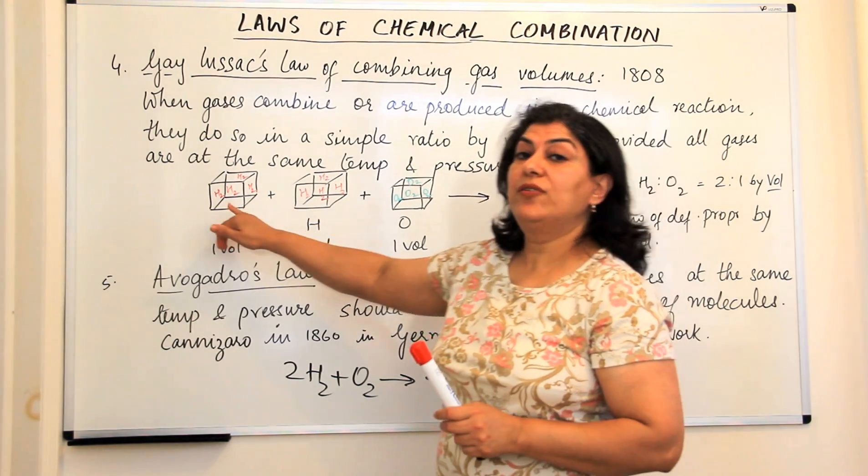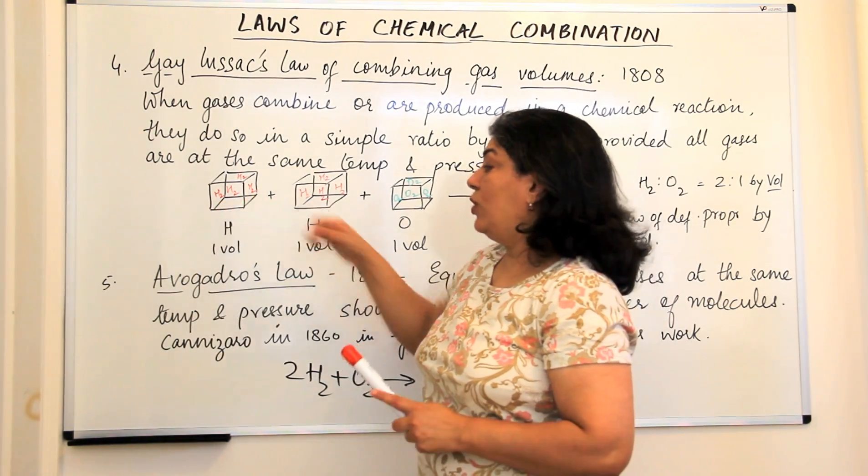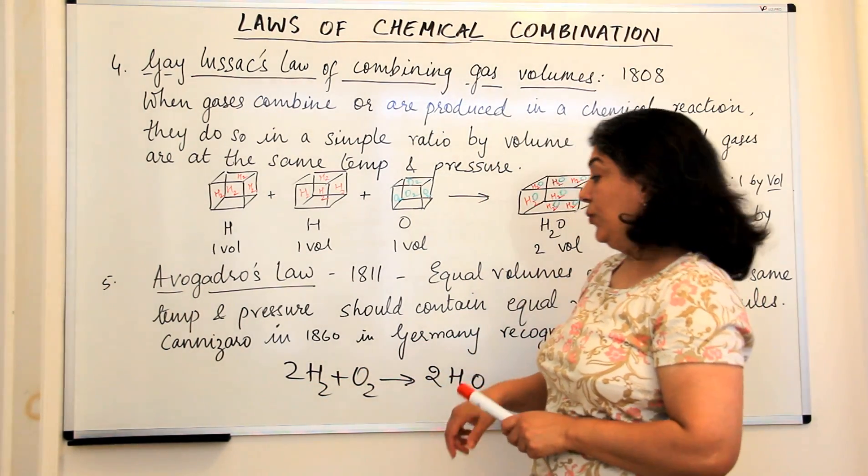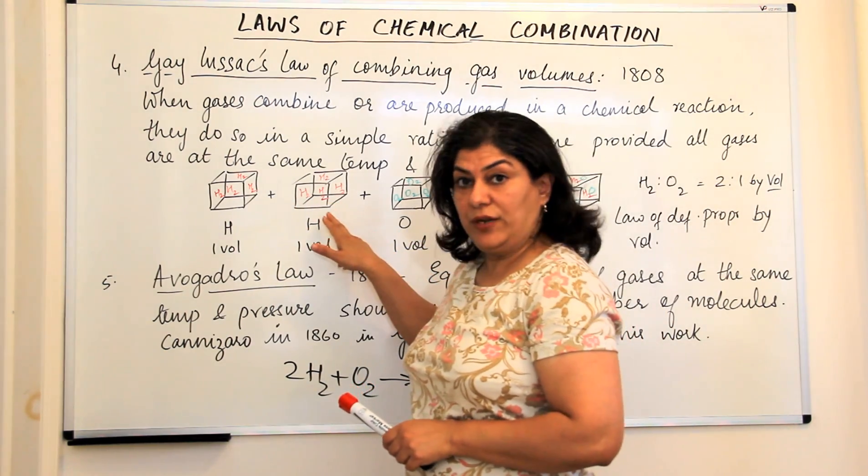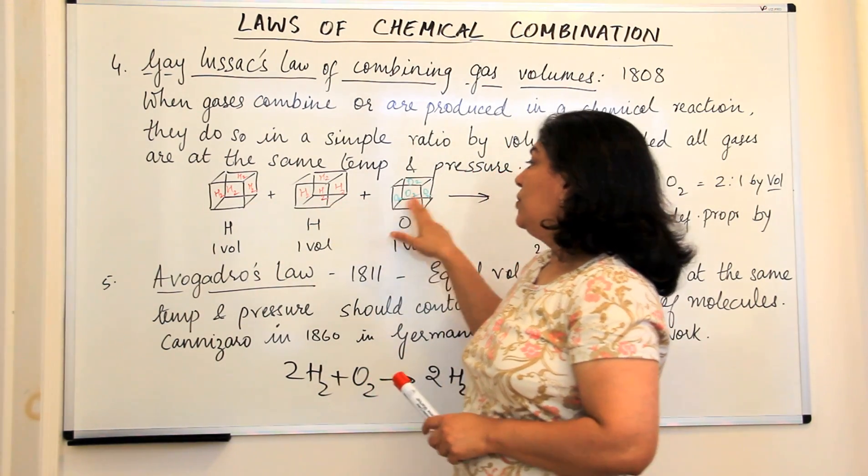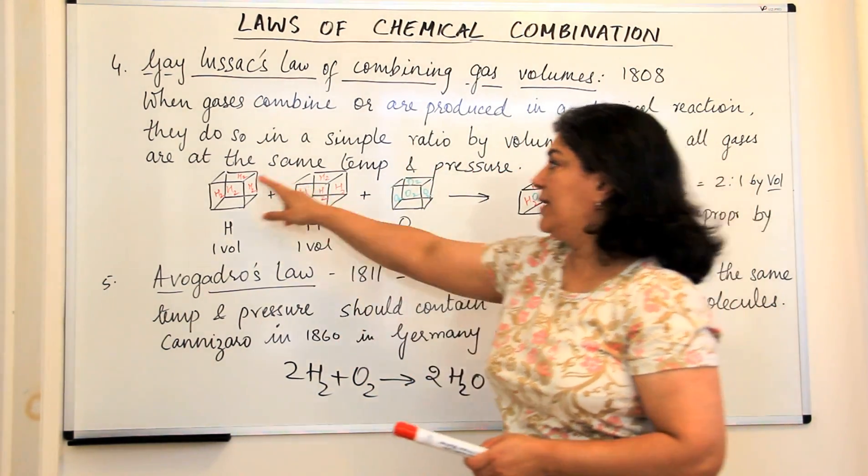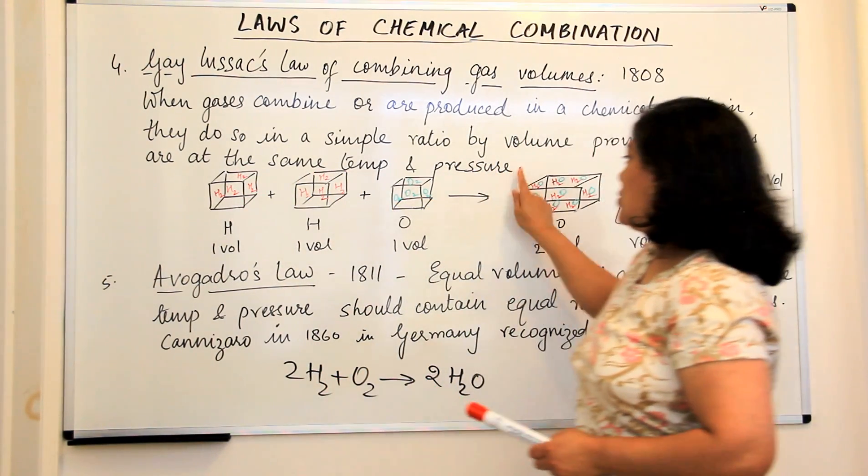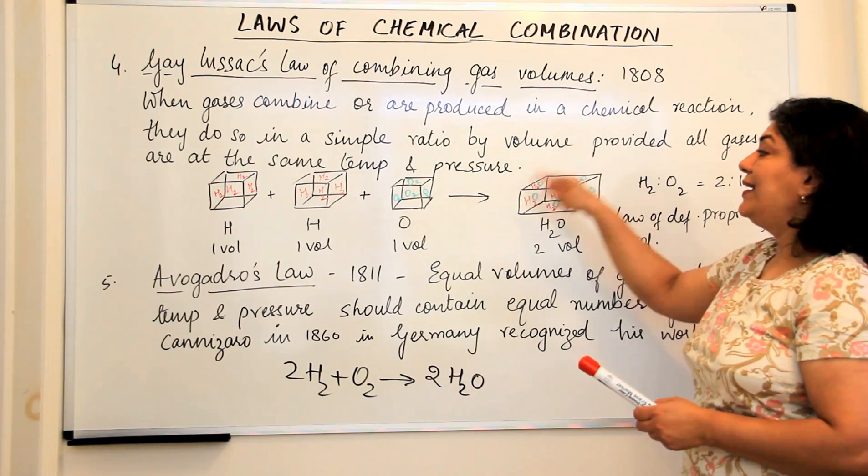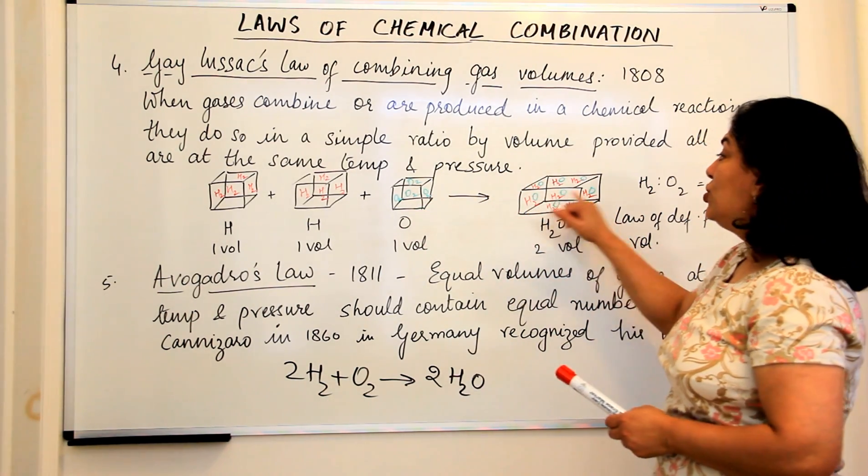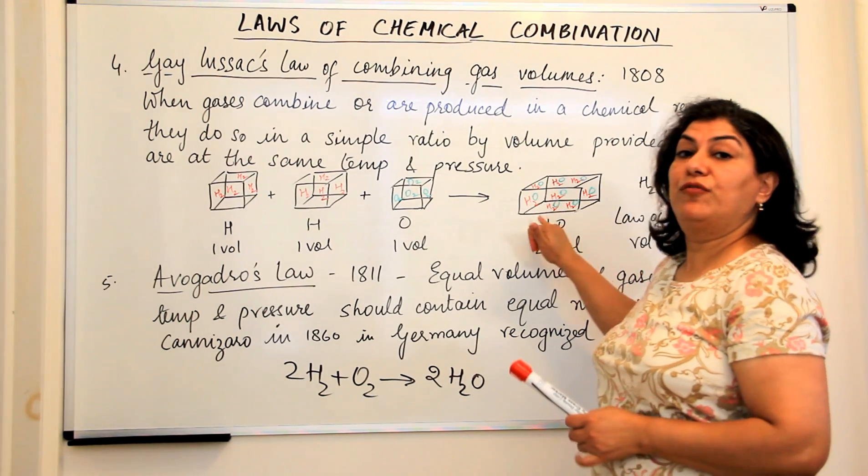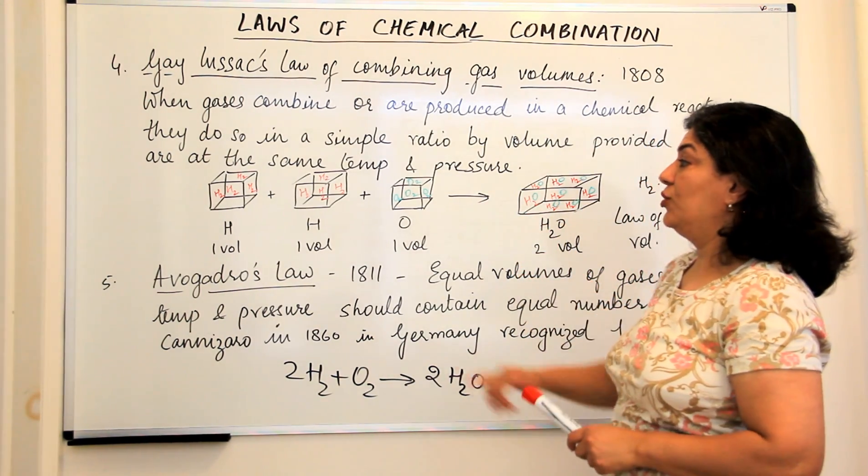If we take hydrogen gas, the equation is 2H2 plus O2 gives you 2H2O. Two volumes of hydrogen combine with one volume of oxygen. Let us assume that each cube represents one volume to produce water which is twice the volume, that is two volumes of water. Now water is in the form of water vapor.